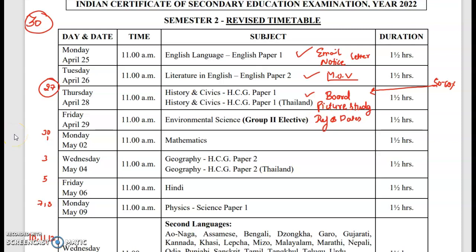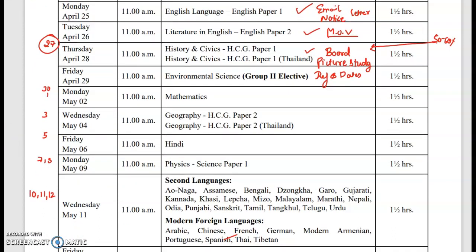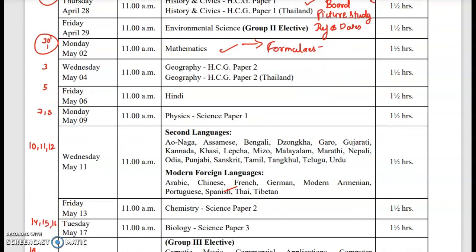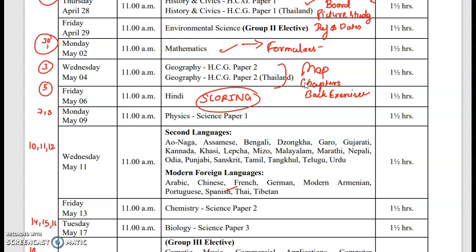Picture study is also important — make sure you identify the characters; definitions and dates must be learned by heart and all headings must be learned. For Mathematics you have two days — learn all the formulas because most questions are asked from basic formulas, like finding the volume and surface area of a cylinder. These are very basic questions so that everybody scores well. For Geography you have one day — do map work and all those chapters, back exercises, and reasoning questions are important. Hindi is a very scoring subject — complete all the chapters and try to revise Hindi in two days.